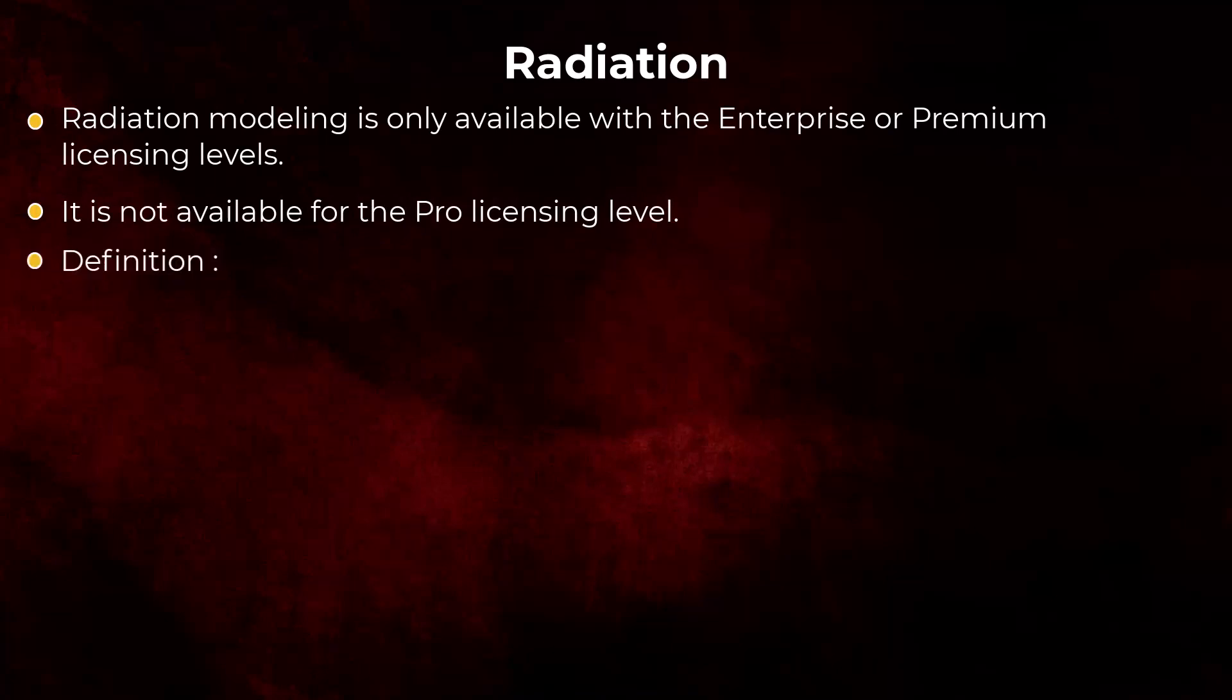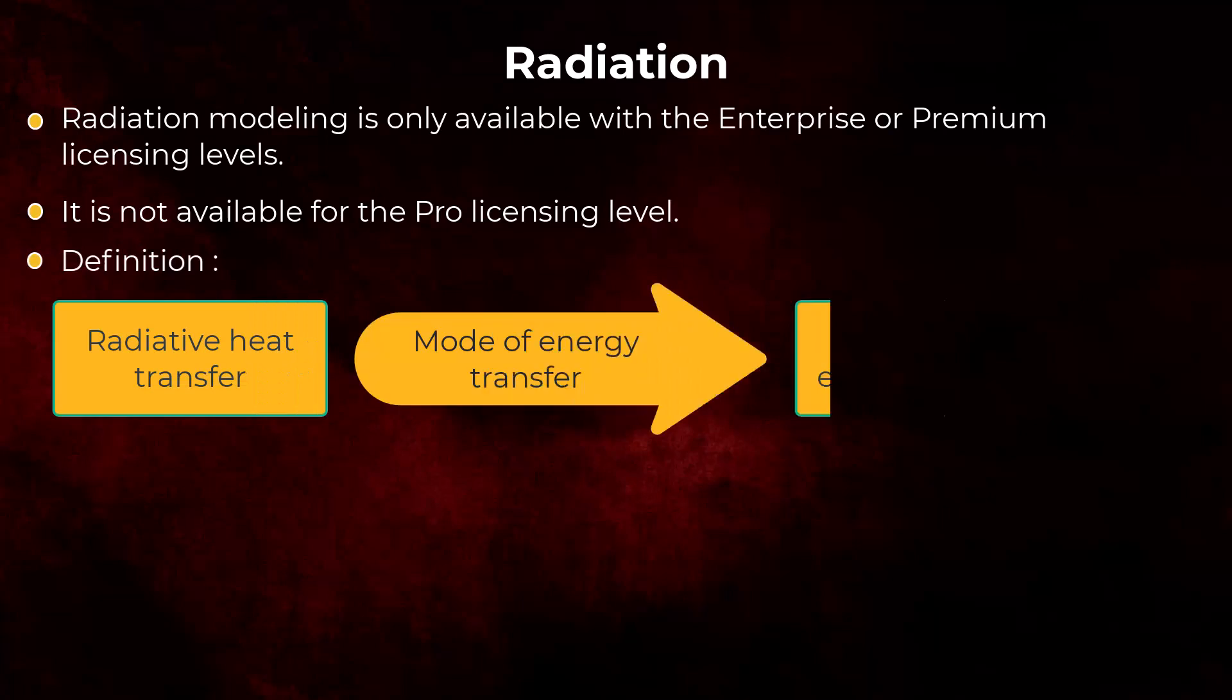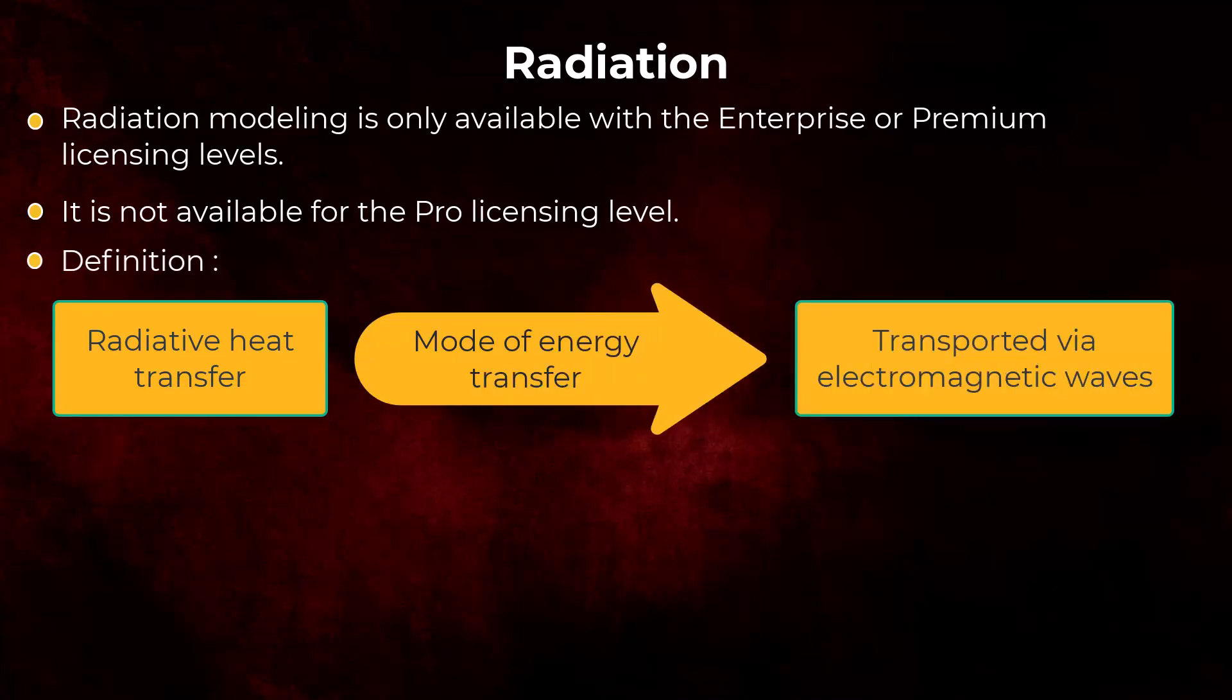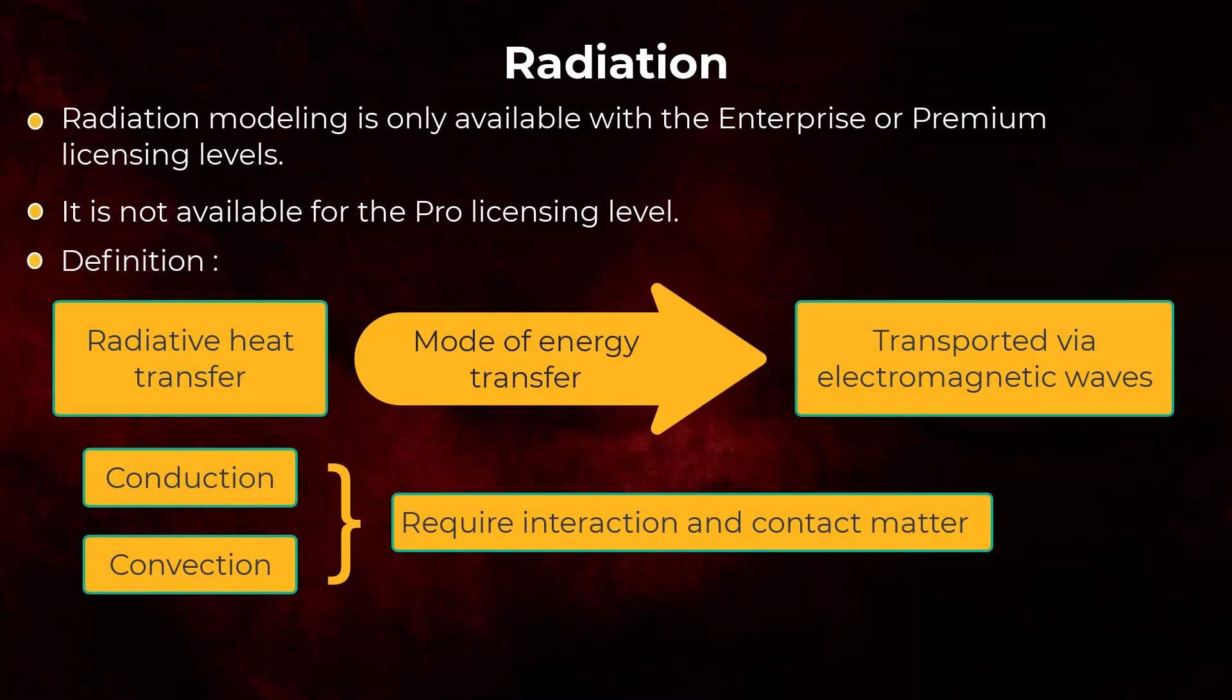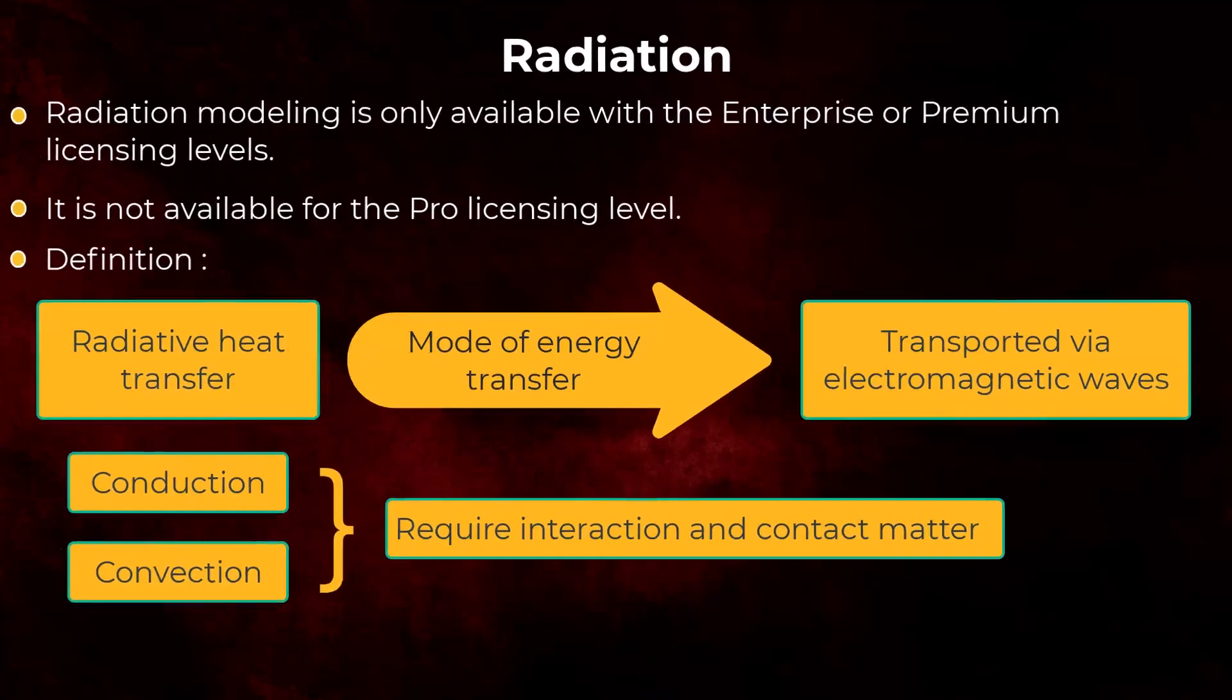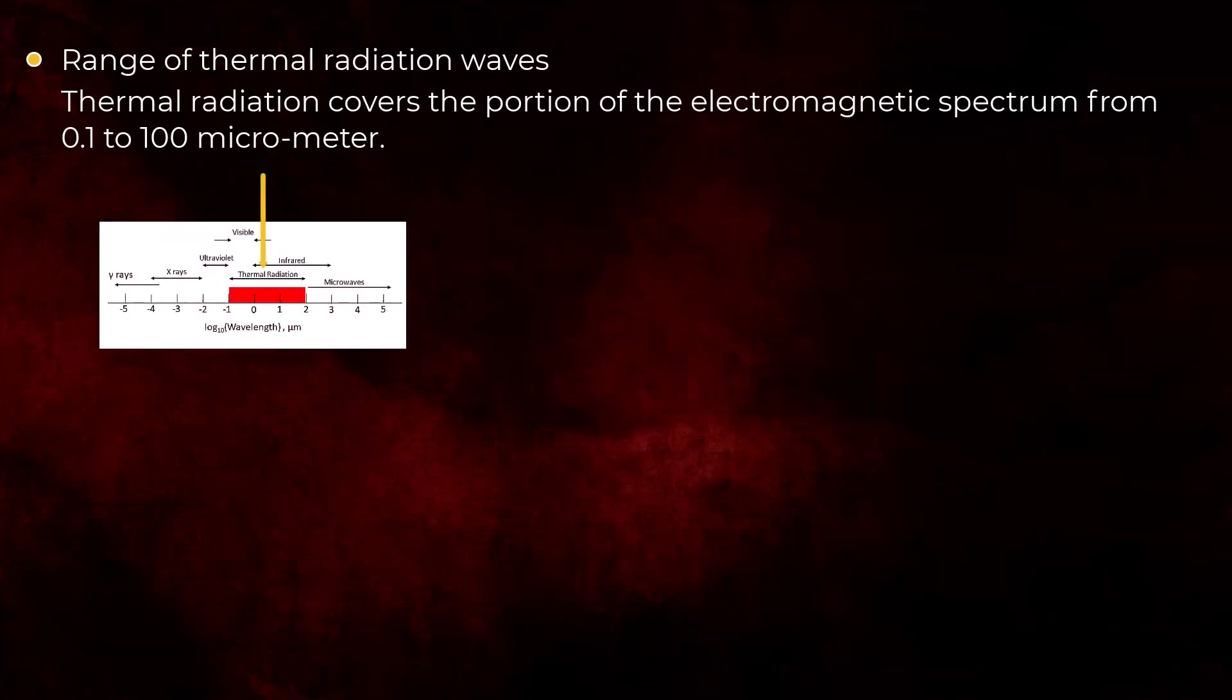To begin with, radiative heat transfer is a mode of energy transfer where energy is transported by electromagnetic waves. Because of this, it is different than conduction or convection, which require interaction and contact of matter. When we talk about thermal radiation, we usually mean radiation which is detected as heat or light, and this covers a subset of the total electromagnetic spectrum.